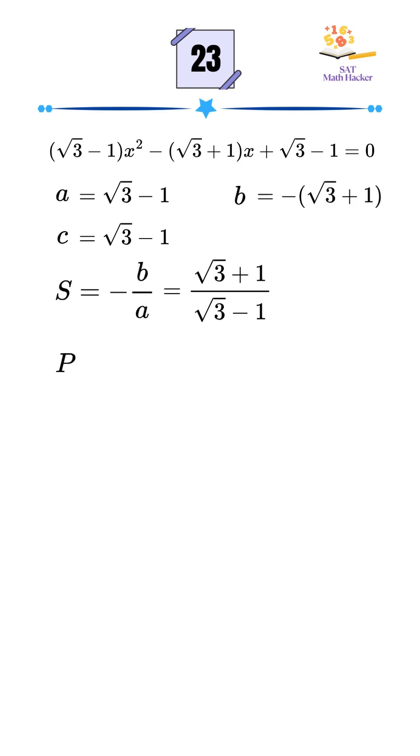The product of the roots is c over a, and since both are the same that simplifies to 1. Now we need P over S which becomes 1 divided by the sum.